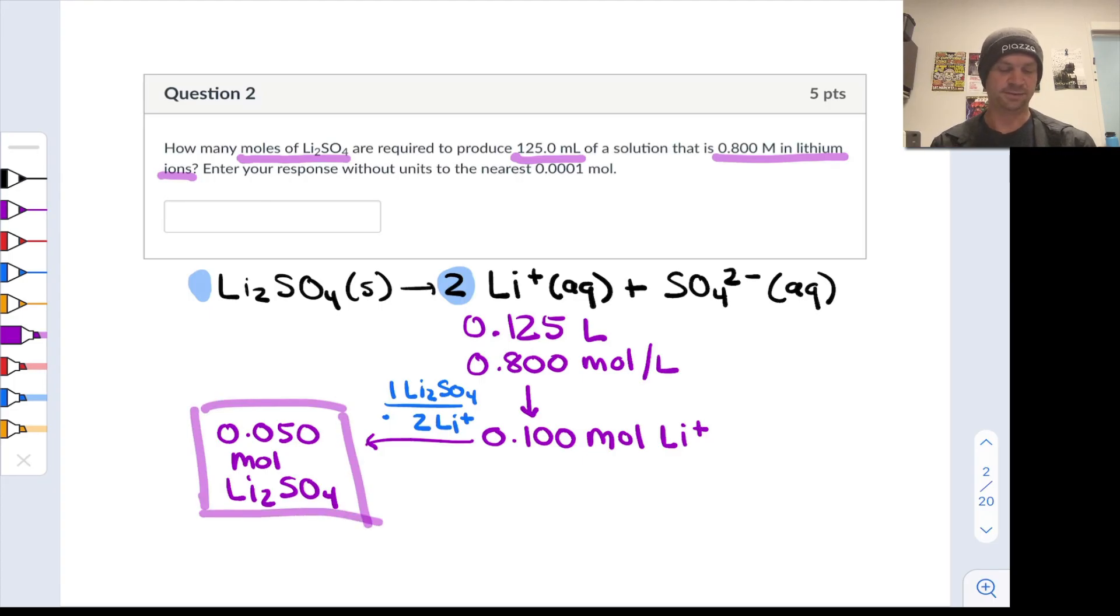So taking that number of moles of Li2SO4, dissolving it up at 125 milliliters total solution volume gives me a final molarity of lithium ions of 0.8 moles per liter.